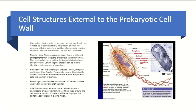Pili are longer than fimbriae but shorter than flagella, and they number usually one to two per cell. Pili are involved in motility as well as the transfer of DNA from one bacterium to another. Axial filaments are not external to the cell wall but act as endoflagella. These fibrils wrap around the cell and their rotation propels the bacteria in a spiral motion.